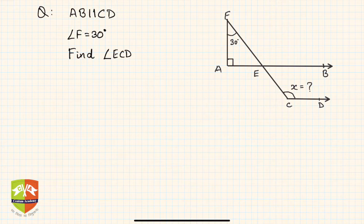In this question, AB is given to be parallel to CD. Angle F here is 30 degrees, and we have to find angle ECD.